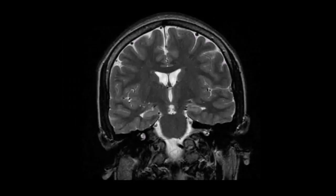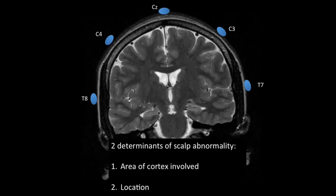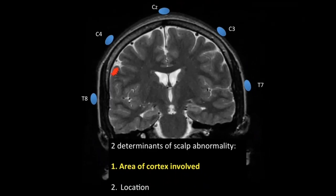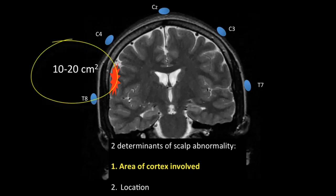To understand why some patients with epilepsy might not show epileptiform discharges, we consider a coronal section of the brain with approximate electrode positions shown. The two major determinants of seeing a scalp abnormality are the area of cortex involved and its location. A small area of synchronous abnormal activity might not be picked up by overlying electrodes, while a larger area is more likely to be detected. In general, 10 to 20 square centimeters of cortex must be involved for the abnormality to be consistently demonstrated on scalp EEG.